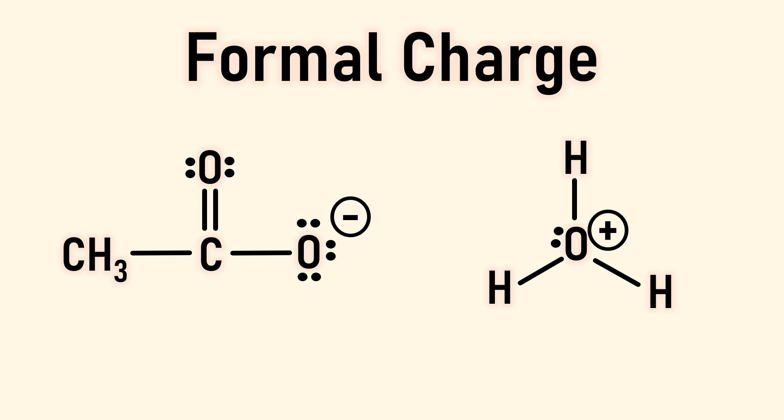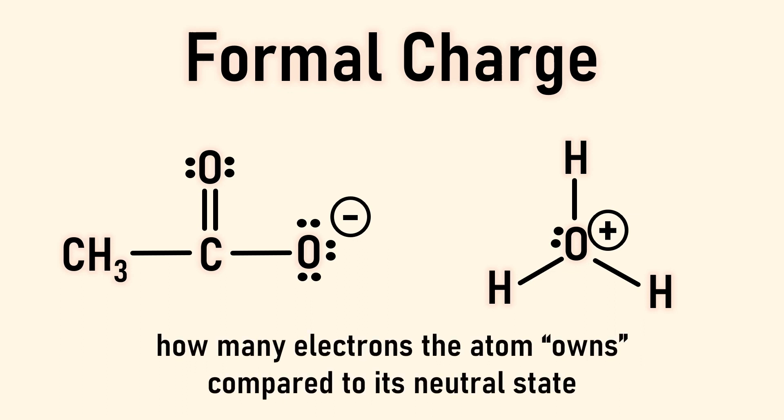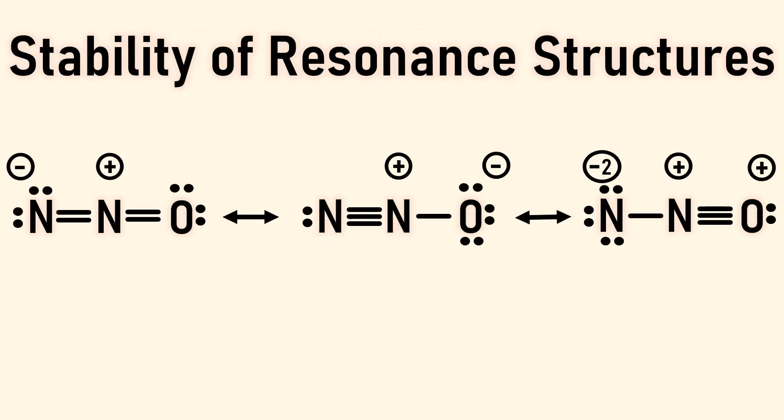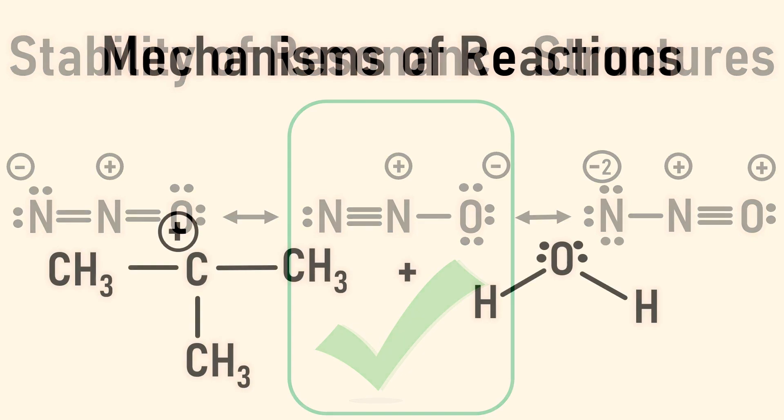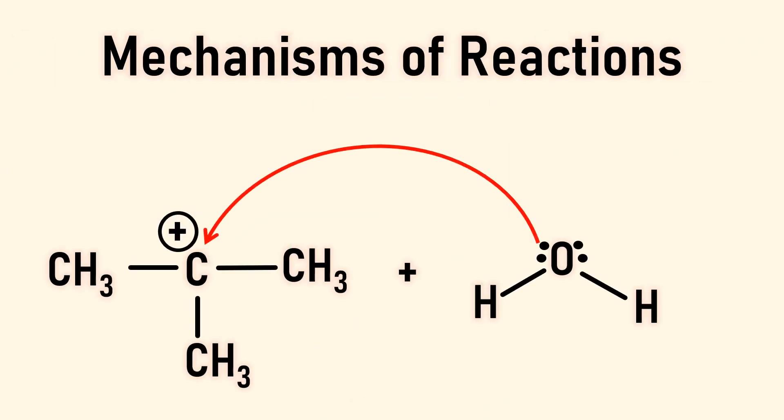Formal charge is a charge assigned to an atom in a molecule or polyatomic ion based on how many electrons the atom owns compared to its neutral state. This helps us understand or visualize the electron charge density in a molecule. Formal charge is important in understanding stability of resonance structures and in determining mechanisms of reactions.